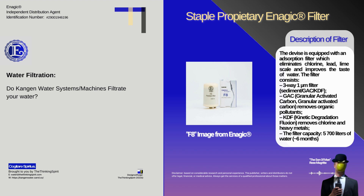The Enagic Kangen water systems do filtrate water, however there is only one filter. It functions through absorption, which eliminates chlorine, lead, limescale and improves taste. This proprietary filter is a three-way one-micron filter consisting of granular activated carbon, which removes organic pollutants, and kinetic degradation fluxion (KDF), which removes chlorine and heavy metals.